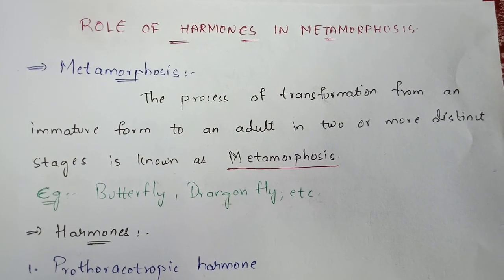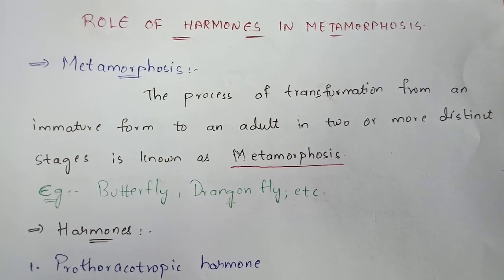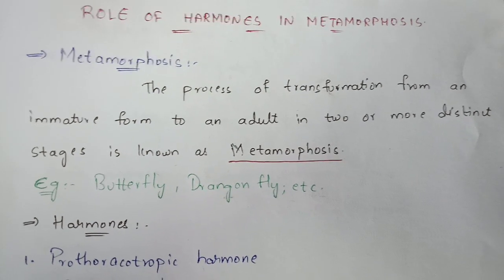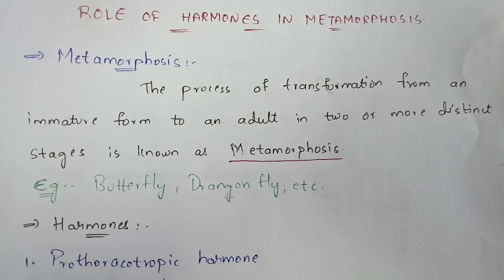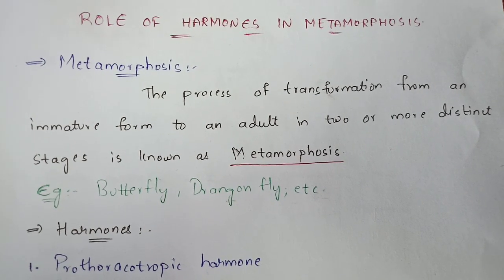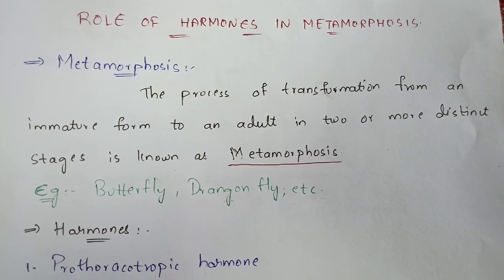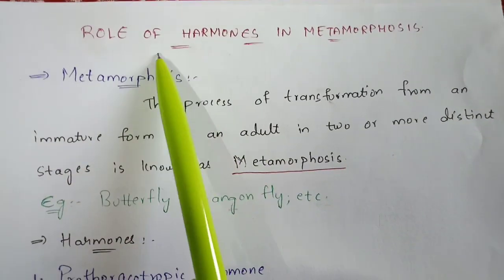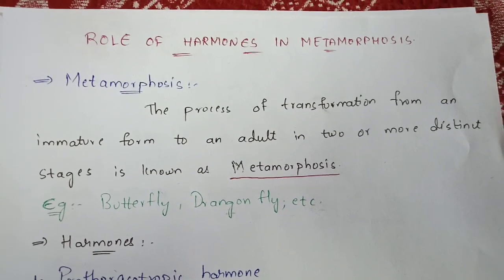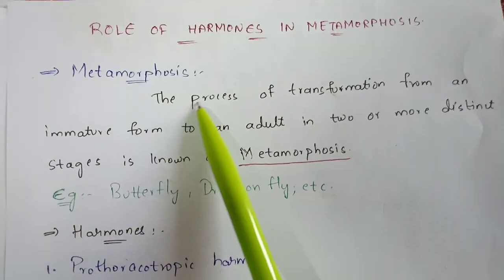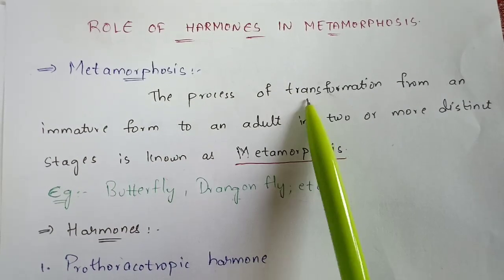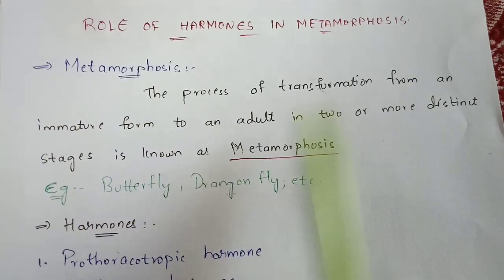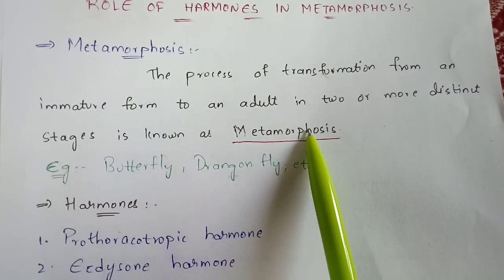Firstly, you have to know what is meant by metamorphosis. I explained this in my previous video — the link will be given in the description box. In this video, I'm going to give you a definition and a little explanation on metamorphosis, because if you know the metamorphosis process, then only you can understand the role of hormones which plays in that metamorphosis process. The process of transformation from an immature form to an adult in two or more distinct stages is known as metamorphosis.